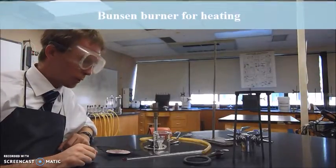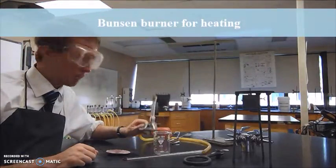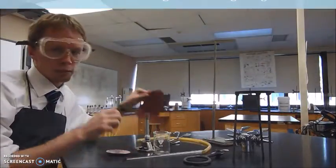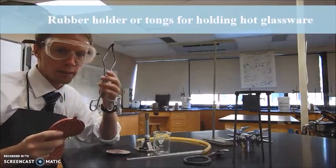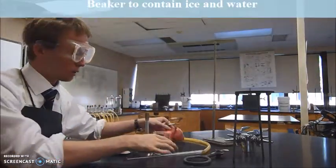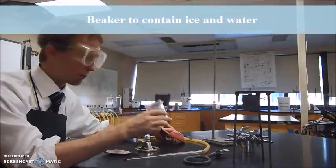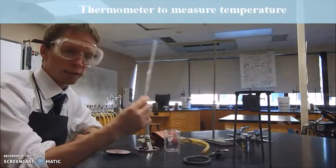In terms of our equipment that we need here, we're going to need our Bunsen burner, we're going to need things to hold hot glassware with, so that's our rubber holders and a set of tongs. We'll have a beaker to contain our ice water mixture. We'll need a thermometer.